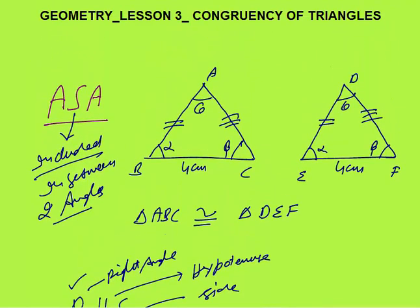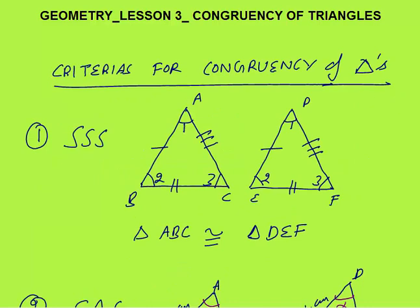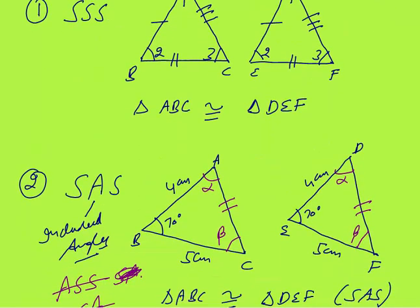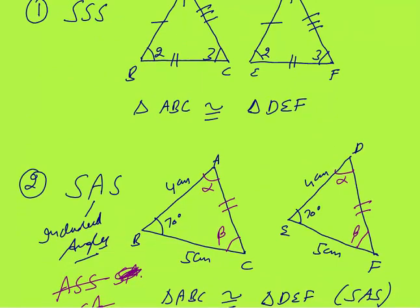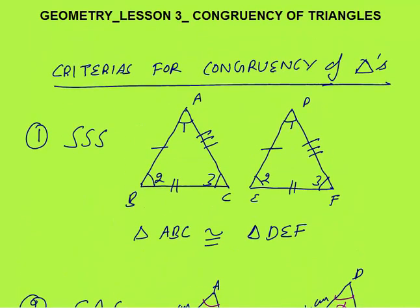So these were the four criteria for congruency of triangles: RHS — right angle, hypotenuse, and one corresponding side equal; ASA — angle, side, angle, where the side is included between the two angles; SSS — all corresponding sides equal; and SAS — side, angle, side, where the angle is included between the two sides.